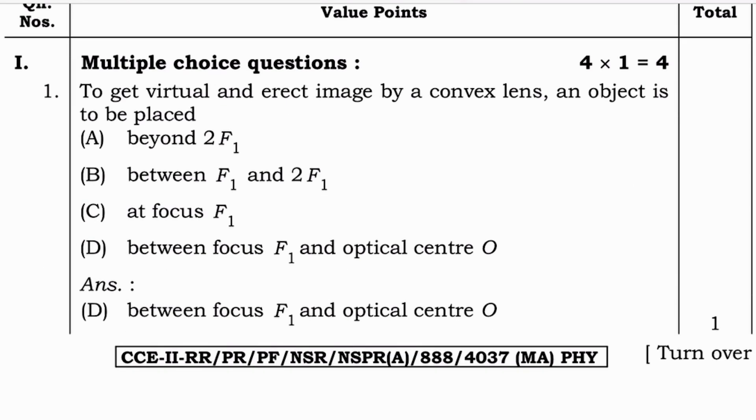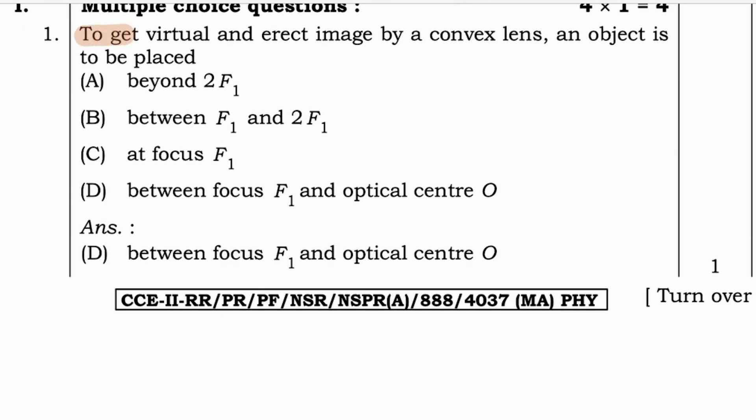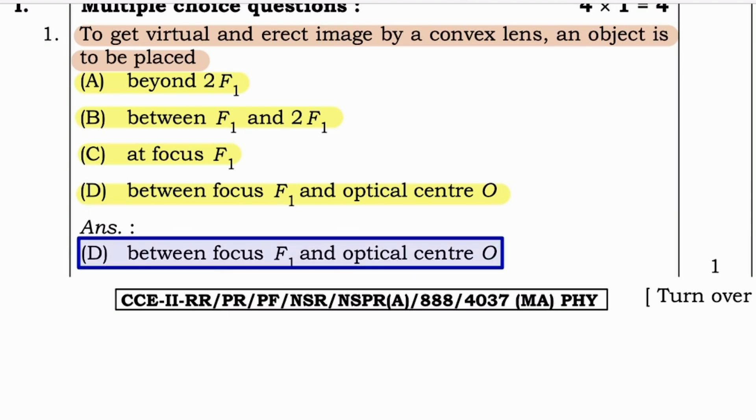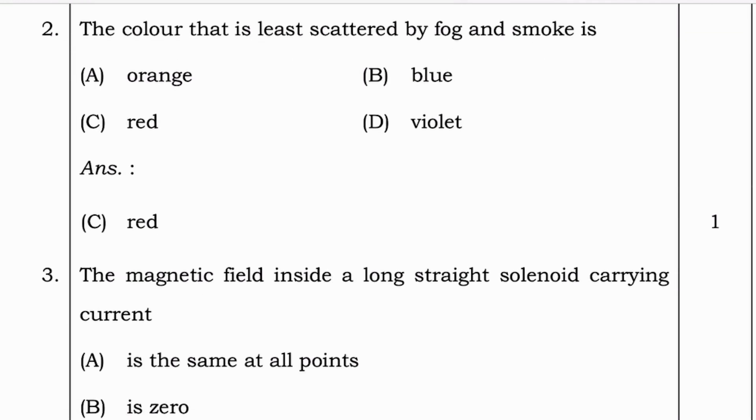Next question. To get virtual and erect image by a convex lens, an object is to be placed beyond 2F1, between F1 and 2F1, at focus F1, or between focus F1 and optical center O. And the answer is between focus F1 and optical center O.